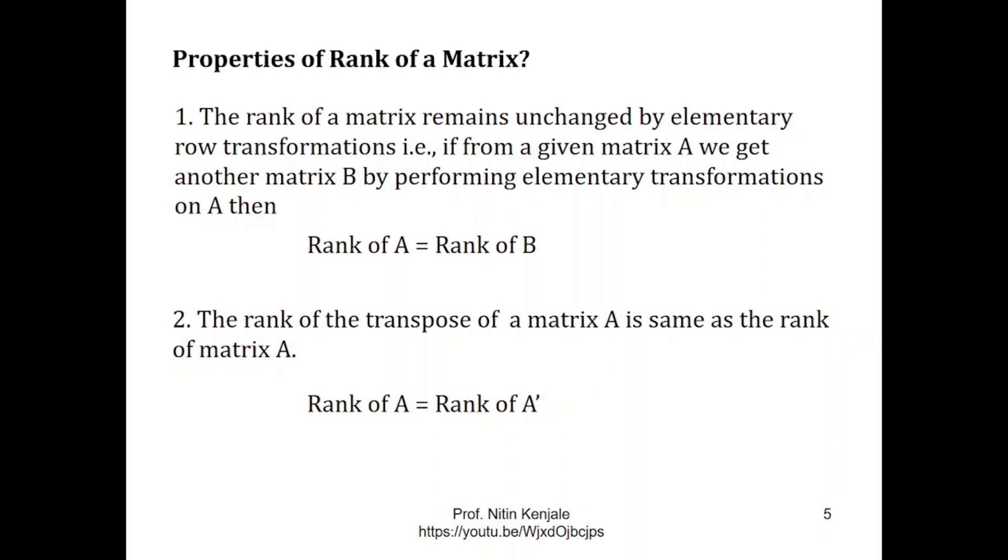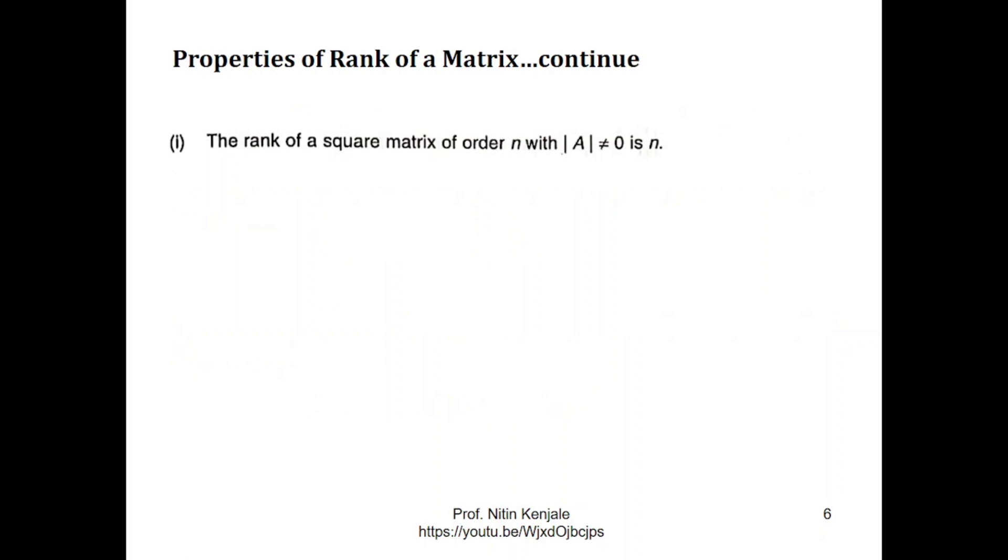Now we see some other properties of rank of the matrix. They are as follows. The rank of the square matrix of order n with determinant not equal to 0 is always equal to n. That means if the matrix is of order 4x4 and its determinant is not equal to 0 then its rank is 4.